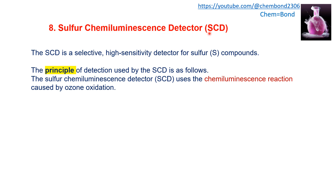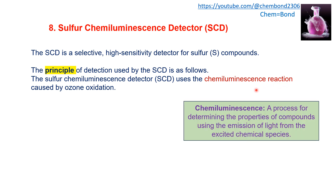The sulfur chemiluminescence detector (SCD), as the name indicates, is a selective and highly sensitive detector for sulfur-containing compounds. The SCD uses a chemiluminescence reaction caused by ozone oxidation as its basic principle. Chemiluminescence is a process for determining the properties of a compound using the emission of light from excited chemical species. Luminosity is the emission of light, and for this emission, the atom or molecule must be in the excited state. When it moves from the excited state to the ground state, it emits a photon.